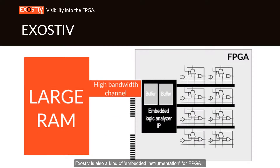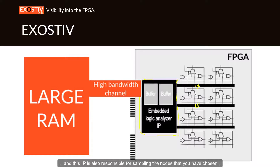Exhaustive is also a kind of embedded instrumentation for FPGA. Like a JTAG-based logic analyzer, we also insert a piece of IP into the FPGA, and this IP is also responsible for sampling the nodes that you have chosen. But unlike a JTAG-based logic analyzer, we don't store all the traces inside the FPGA.